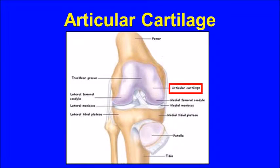In this diagram the kneecap has been moved out of the way so that you can see the thigh bone behind it better. This is a healthy appearing knee joint. The ends of the bones are covered with a smooth cushion surface called articular cartilage, shown in light purple in this diagram. This smooth cartilage allows the bones to glide over one another easily as the knee bends with routine activities.